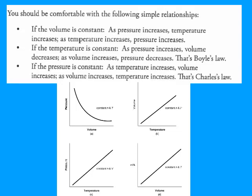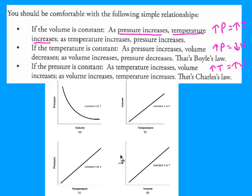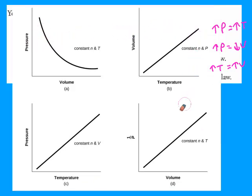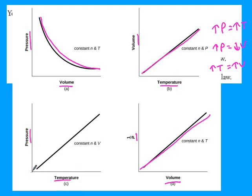Gas law relationships: if volume is constant and pressure increases, temperature increases. If temperature is constant and pressure increases, volume decreases. If temperature increases, volume also increases. Graphically, pressure and volume have an inverse relationship—as volume goes up, pressure goes down. Volume and temperature is a direct relationship, as is pressure and temperature.